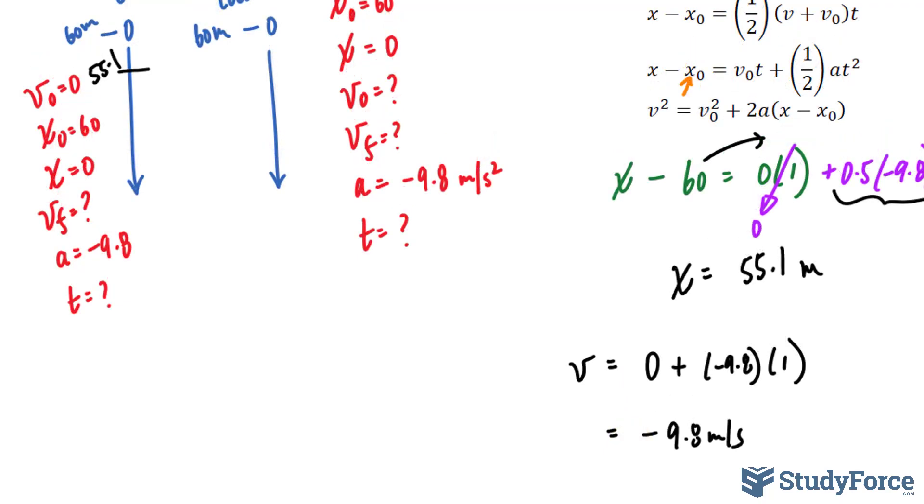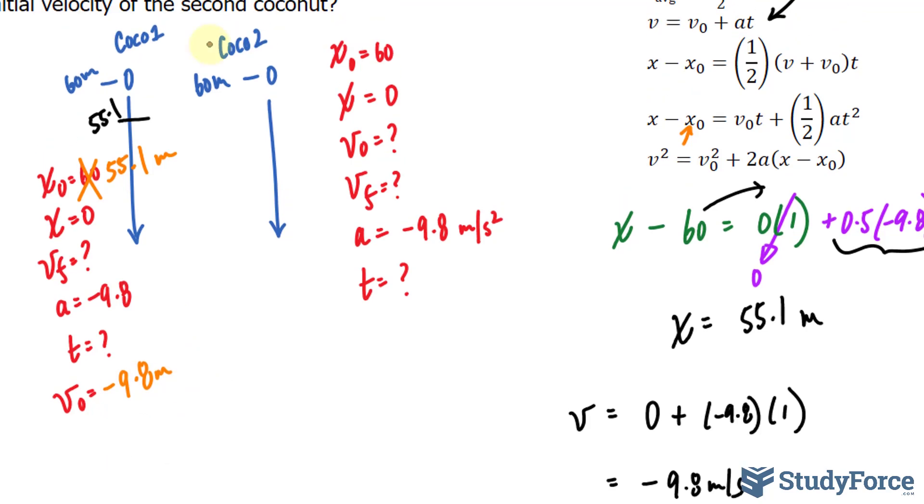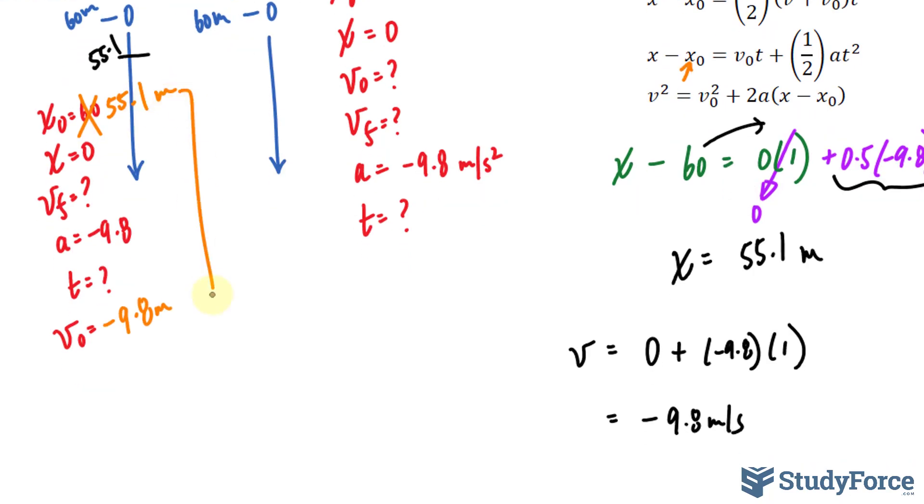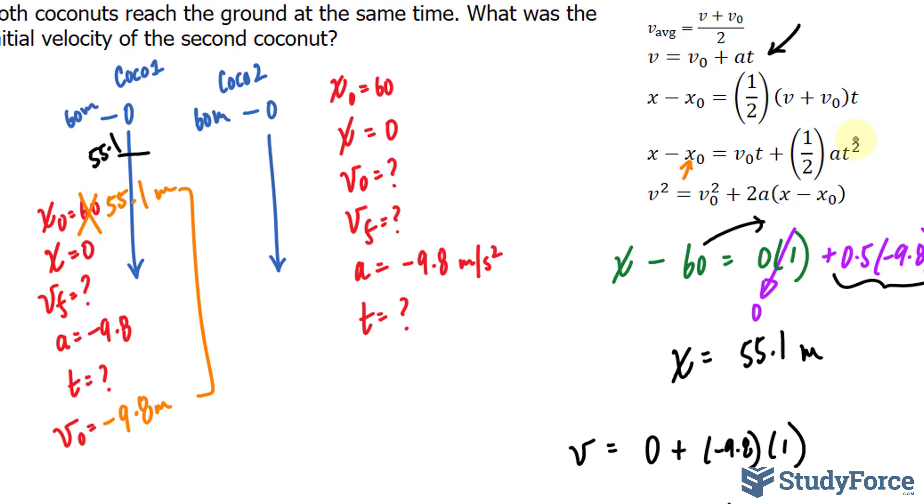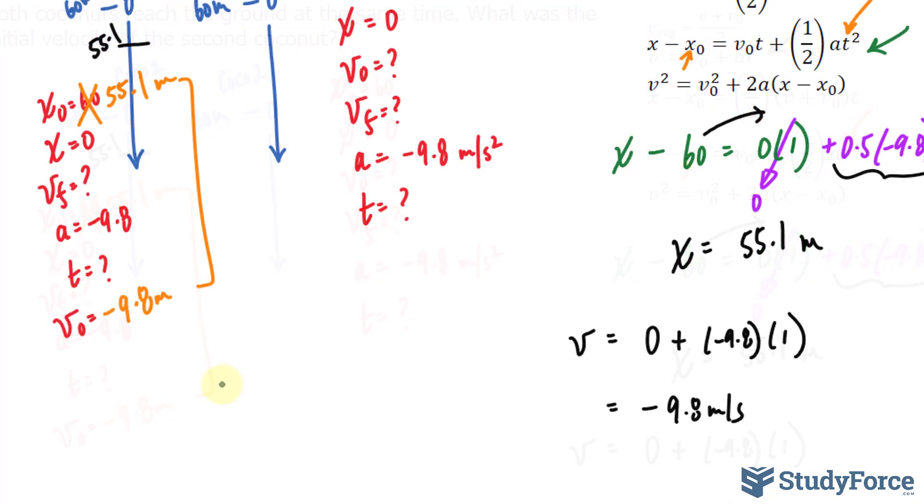So we can now replace this with 55.1 meters and replace the initial velocity, which we wrote down as zero, with negative 9.8. So these are the numbers relative to one second, which is the time that coconut two was dropped. Using this information, we can actually find out the time for coconut one. And if we find the time for coconut one, it's the same time as coconut two, the same time that they reach the ground.